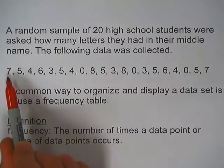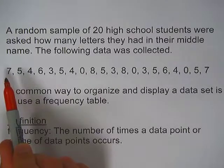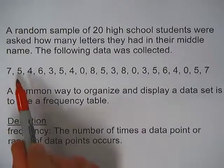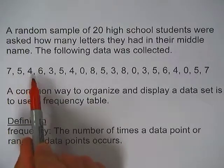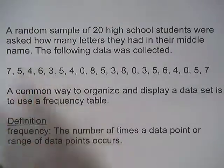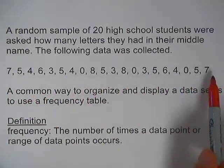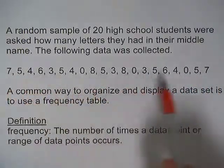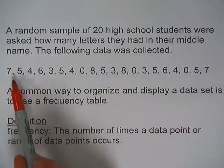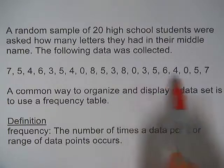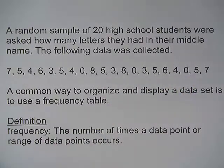Each number represents the length of a middle name. So we have the first person had a middle name of length seven letters. The second person had a middle name of five letters long, four letters long, six letters long. And you can see that some of these values are repeated. So there were at least two people that had middle names of seven letters. Several people that had middle names of five letters.